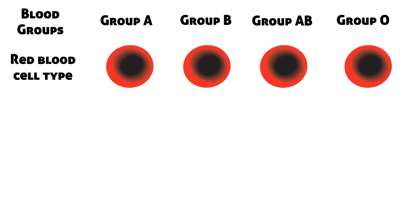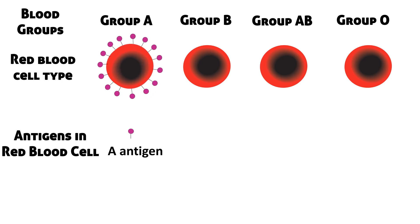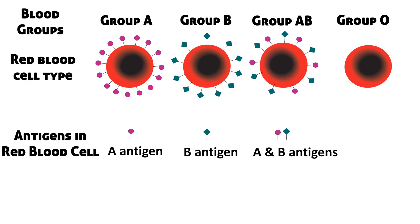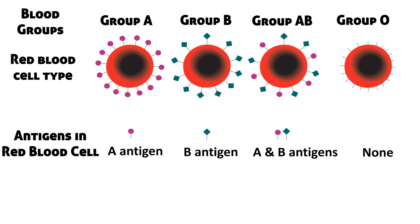These types of red blood cells depend on antigens present in them. People with blood group A have A antigen present on their red blood cells. People with blood group B have B antigen. People with blood group AB have both A and B antigens. And people with blood group O have neither A antigen nor B antigen on their red blood cells.